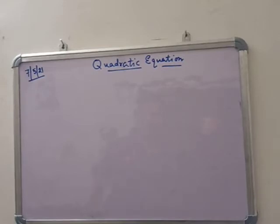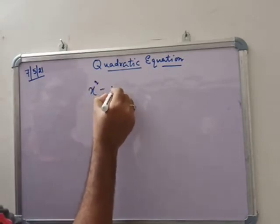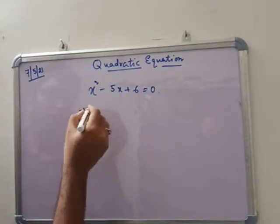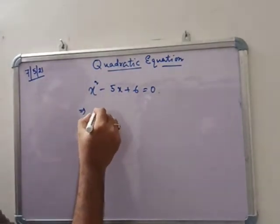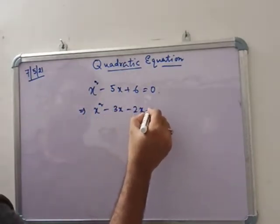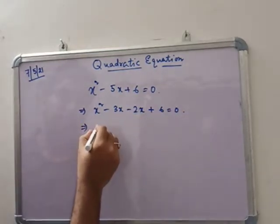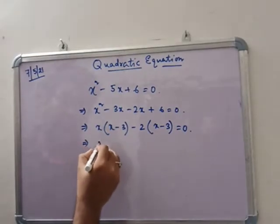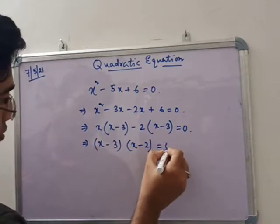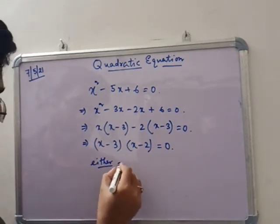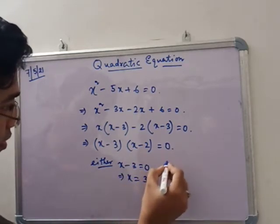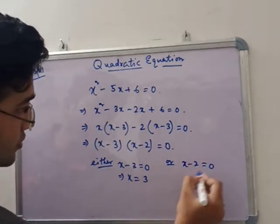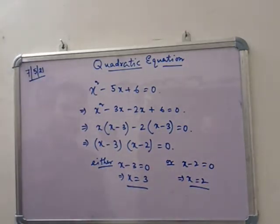Today we are going to discuss the next part of the quadratic equation. In the previous exercise we saw that if we write this type of equation, we can easily solve it by middle-term factoring. That means x squared minus 3x minus 2x plus 6 equals 0, giving us x minus 3 times x minus 2 equals 0. So either x equals 3 or x equals 2.